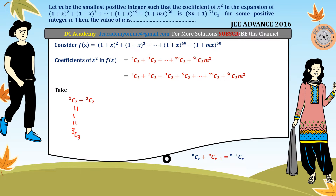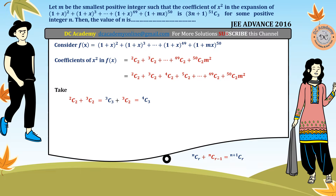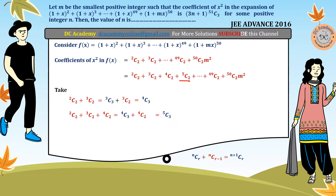So the first two terms become ³C₃ + ³C₂, which by the identity (with n=3, r=3) equals ⁴C₃. Adding the next term ⁴C₂ gives ⁴C₃ + ⁴C₂ = ⁵C₃. Adding ⁵C₂ gives ⁵C₃ + ⁵C₂ = ⁶C₃. The telescoping pattern continues in this way.